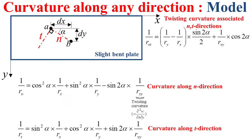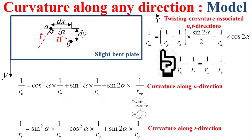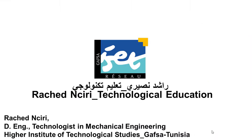It is notable that the sum of curvatures along any two orthogonal directions is constant, of course in the case of a slightly bent plate. Thank you very much for your attention.